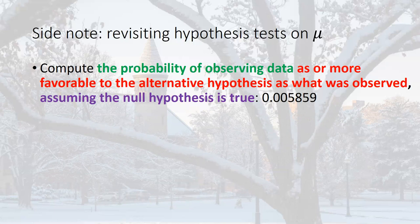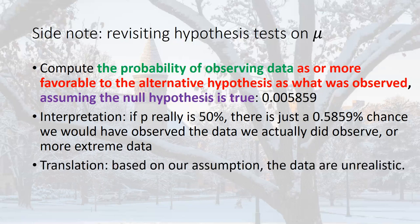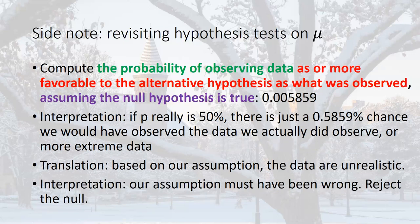The p-value is 0.005859, which means if p really is 50%, there is only about a 0.5859% chance we would have observed winning one or fewer coin tosses. Under our assumption that p is 50%, we observed data that seems very unrealistic. One of two things may have happened: either our assumption was wrong and we reject the null, or we got very unlucky and committed a type one error.